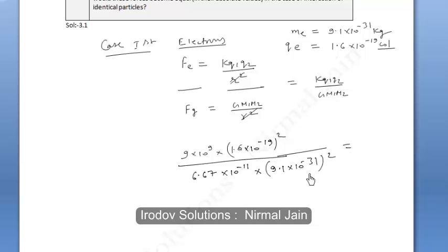If we solve it, then we get the value of 4 times 10 to the power 42. The ratio of electric force to the gravitational force is of this order.